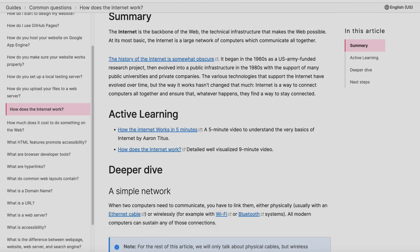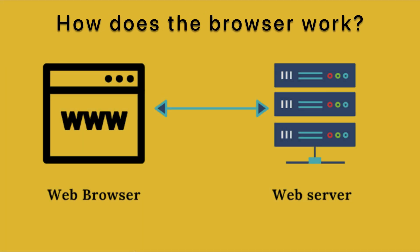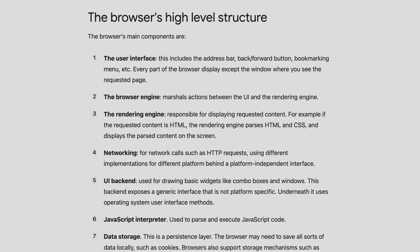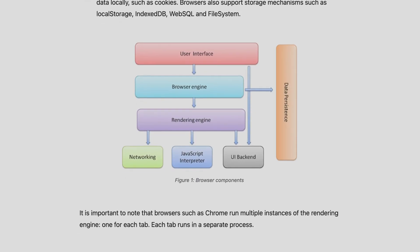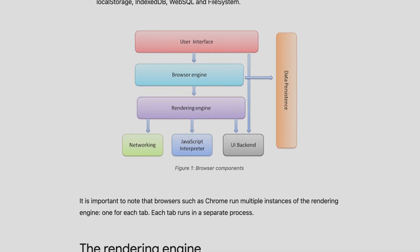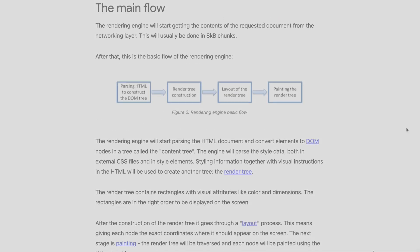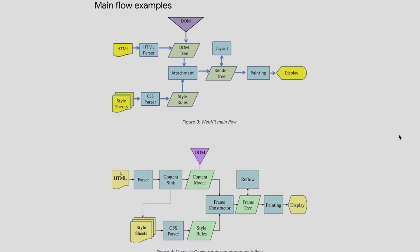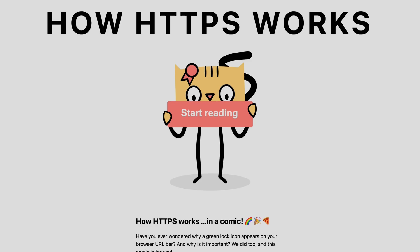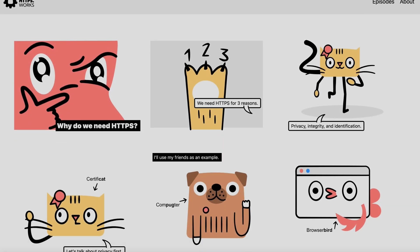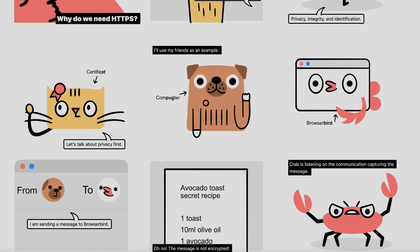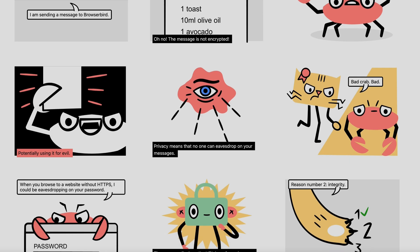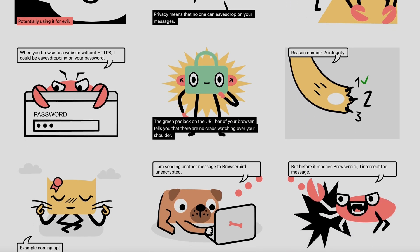There's an MDN Web Docs article on how the internet works. Next, we'll see how the browser works — an article that explains the high-level structure and main components of the browser. The whole diagram is explained: what the rendering engine is, how the flow works, how it works in Chrome and in Mozilla. Then there's another very good resource where they explain how HTTPS works using episodes and characters, which is a very interesting and enjoyable resource.